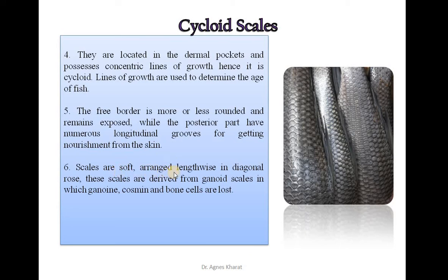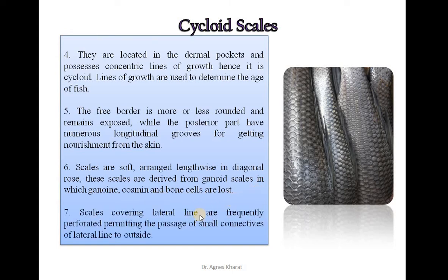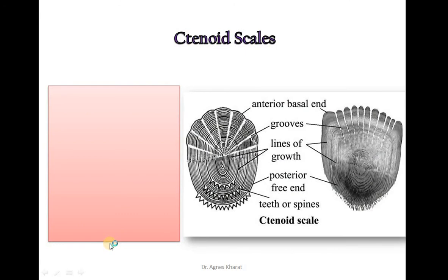Scales are soft and arranged lengthwise in diagonal rows. These scales are derived from ganoid scales in which ganoin, cosmin, and bone cells are lost. Scales covering the lateral line are frequently perforated, permitting the passage of small connectives of the lateral line to the outside.